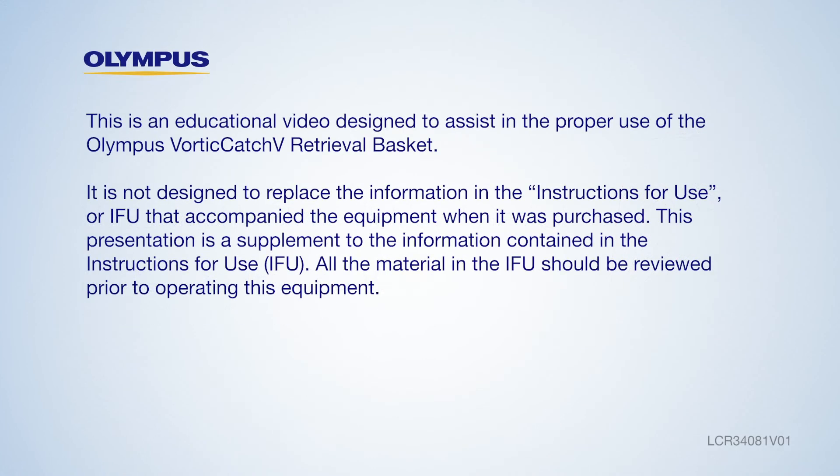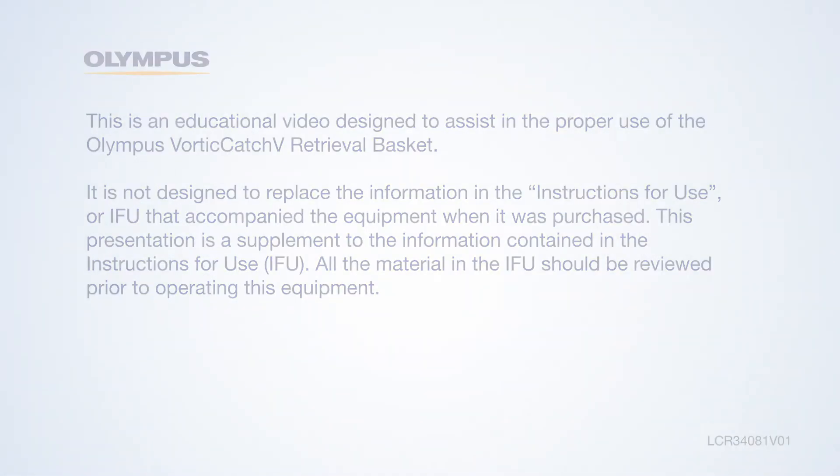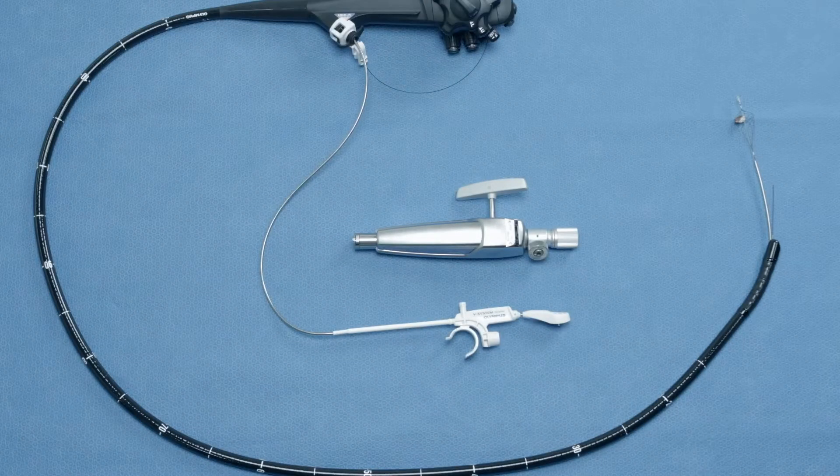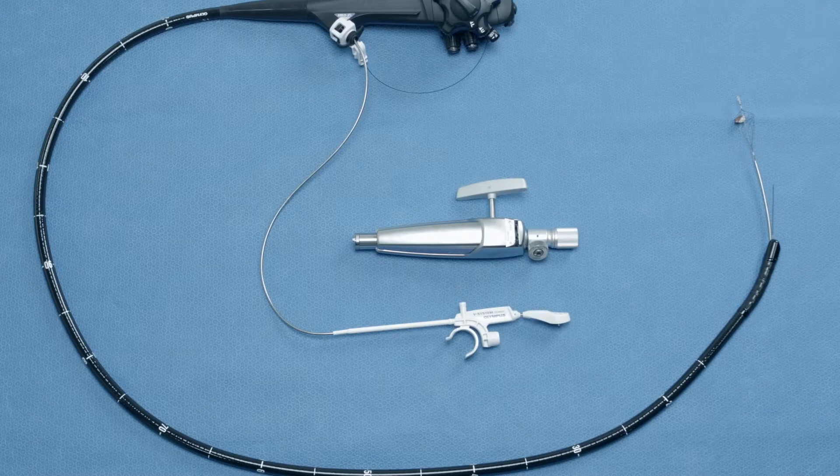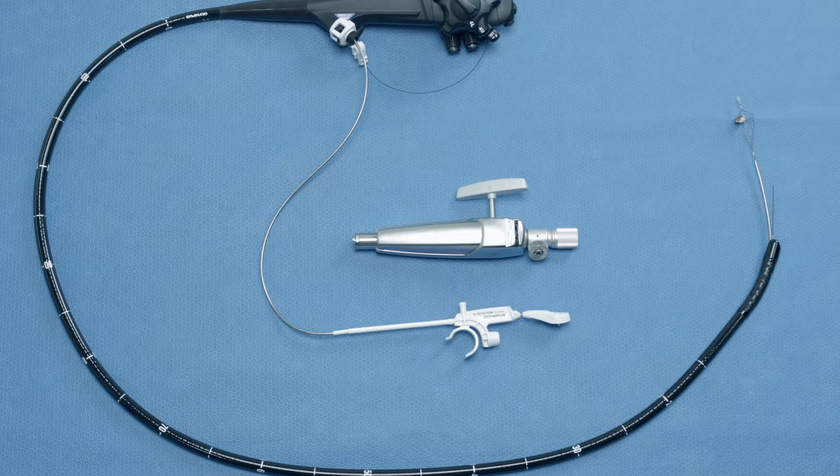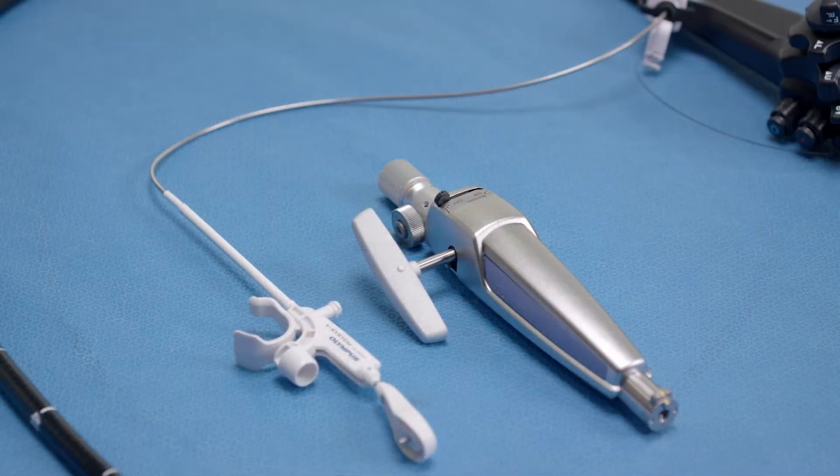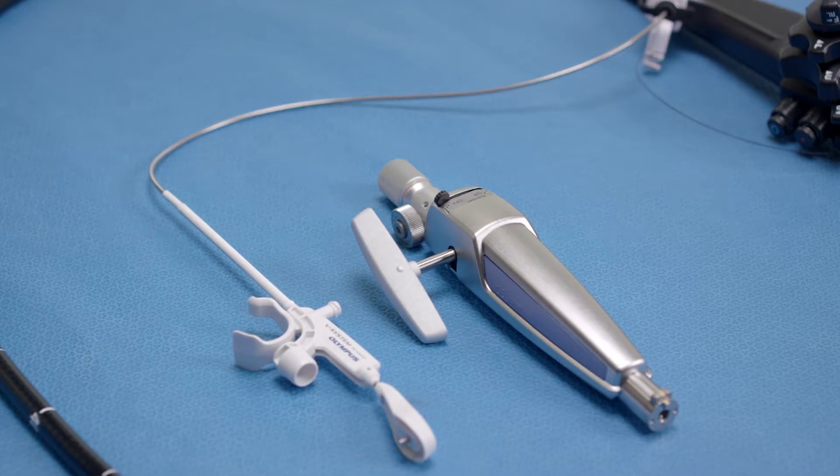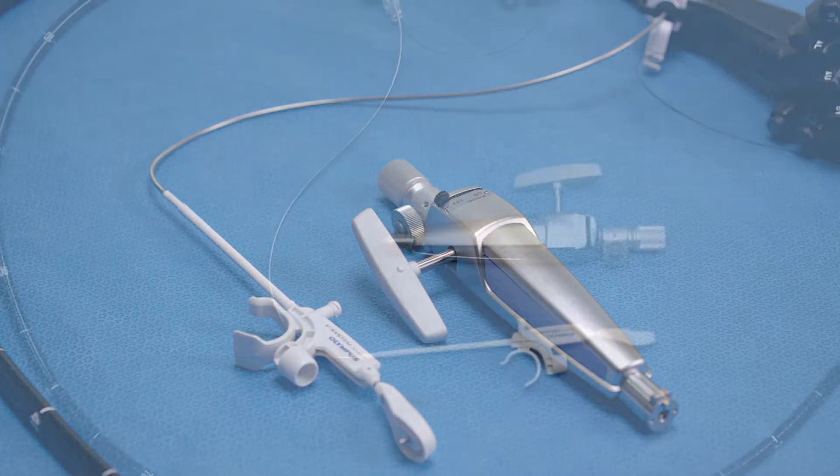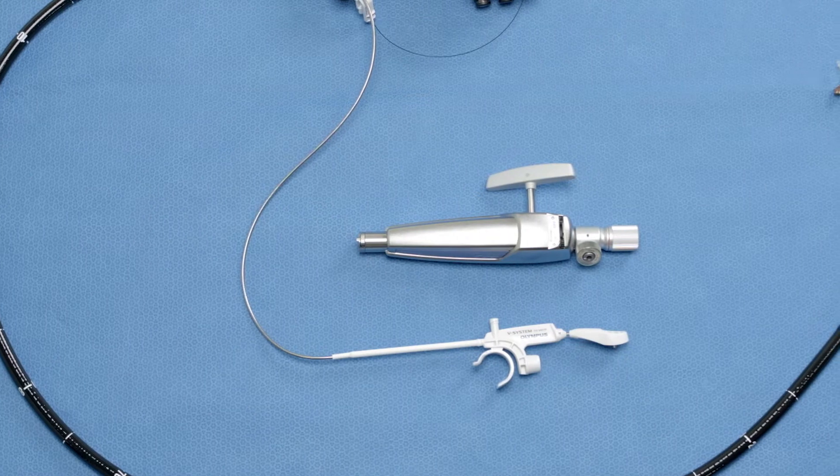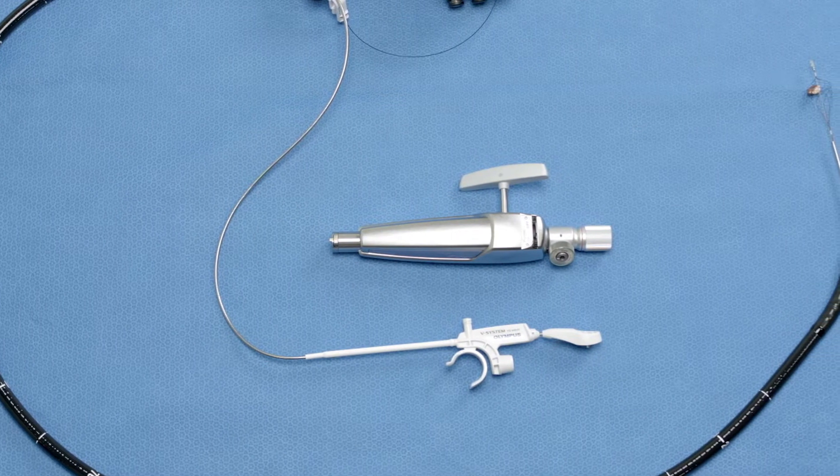Welcome to the VortiCatch V Retrieval Basket Emergency Lithotripsy In-Service. Let's review how to assemble the VortiCatch V Retrieval Basket to the Lithocrush V Mechanical Lithotriptor Handle. In the event of basket impaction, the VortiCatch V Retrieval Basket may be assembled to the Lithocrush V Handle for Emergency Lithotripsy.